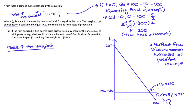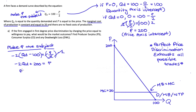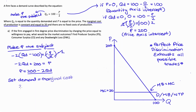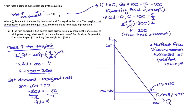Taking the demand equation and subtracting 100 from both sides gives Q_D minus 100 = negative P over 2. Multiplying both sides by negative 2 gives P = 200 minus 2·Q_D — that's our inverse demand equation. Setting that equal to marginal cost: 200 minus 2·Q_D = 20. Subtracting 200 from both sides: negative 2·Q_D = negative 180. Dividing both sides by negative 2: Q_D = 90.